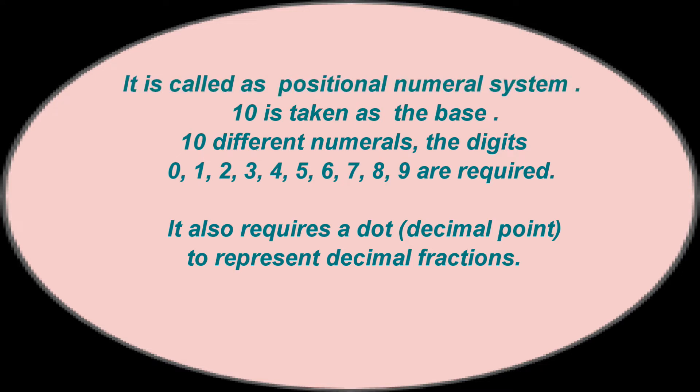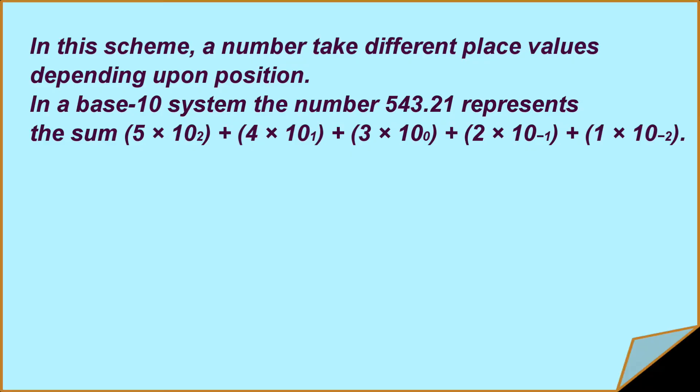10 different numerals, the digits 0, 1, 2, 3, 4, 5, 6, 7, 8, 9 are required. It also requires a dot, decimal point, to represent decimal fractions. In this scheme, a number takes different place values depending upon position. In a base-10 system, the number 543.21 represents the sum 5 × 10² + 4 × 10¹ + 3 × 10⁰ + 2 × 10⁻¹ + 1 × 10⁻².